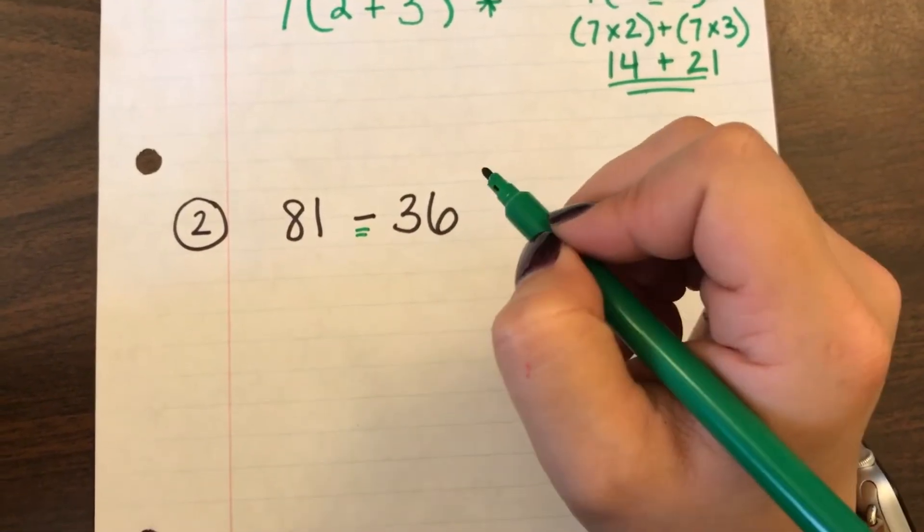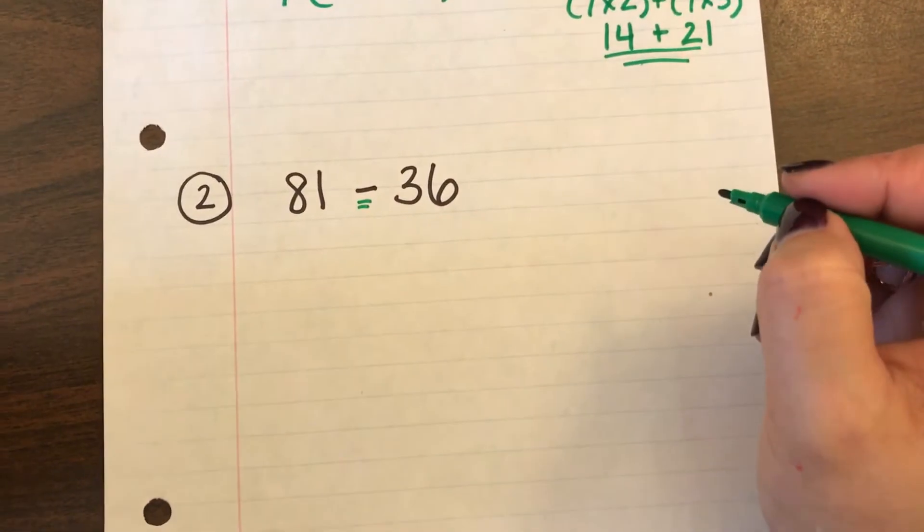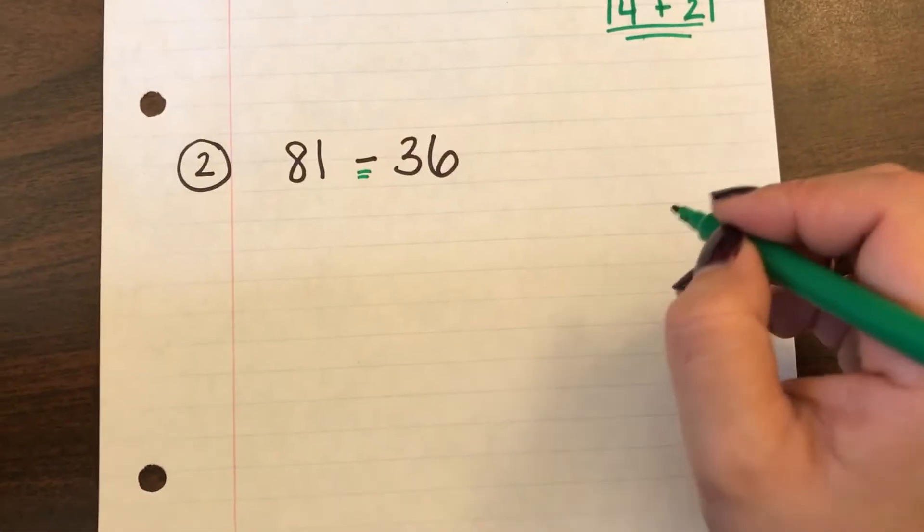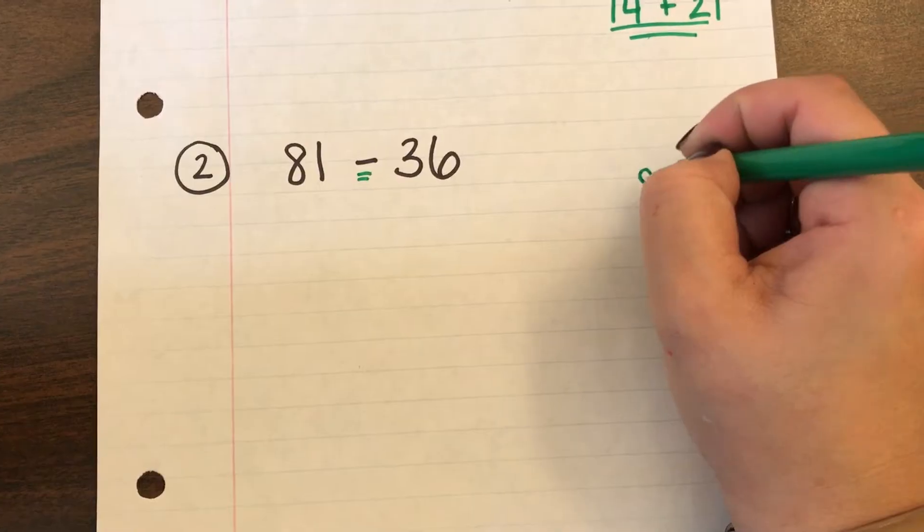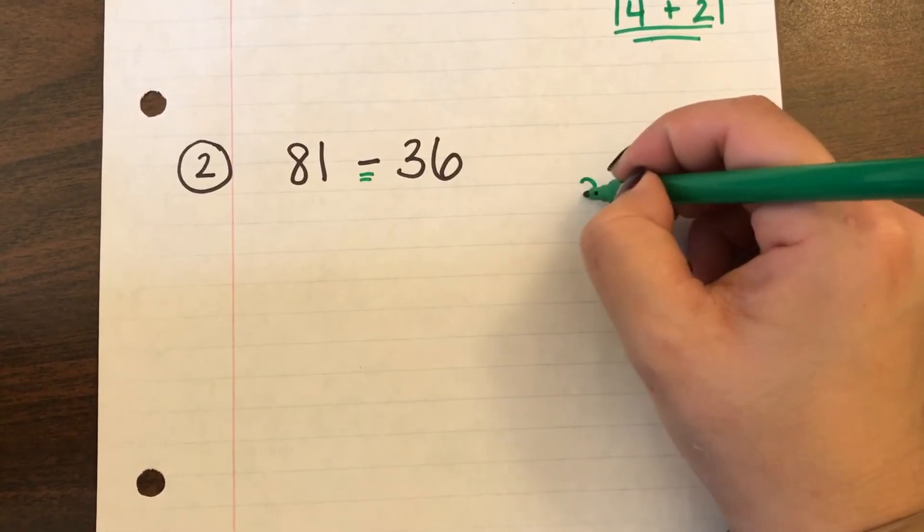If I didn't know what the factors were I could actually find my greatest common factor. So that's what I'm going to do on the side over here. And I know from previous videos that I can use the division method to figure this out.